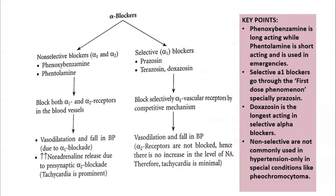Why do we use alpha blockers before beta blockers? If we give beta blockers first, then alpha-1 effects will be predominant and cause vasoconstriction. So we have to block alpha-1 receptors first before giving beta blockers. Phenoxybenzamine is a long-acting alpha-1 blocker, while phentolamine is short-acting and used in emergencies. Non-selective blockers are not used in hypertension except in special conditions like pheochromocytoma. We usually use selective alpha blockers for hypertension, such as prazosin and doxazosin. Selective alpha-1 blockers undergo the first-dose phenomenon, especially prazosin — they cause postural hypotension on initial dosing, so patients are advised to take them at night. Doxazosin is the longest-acting selective alpha blocker.